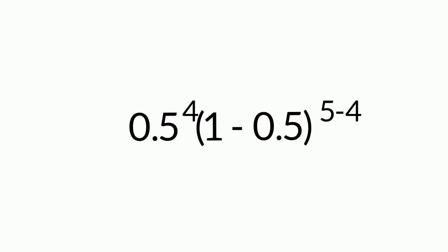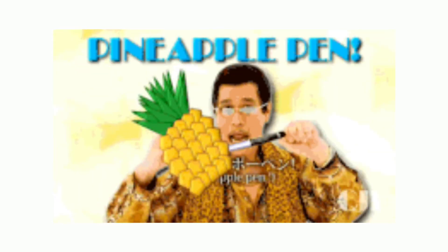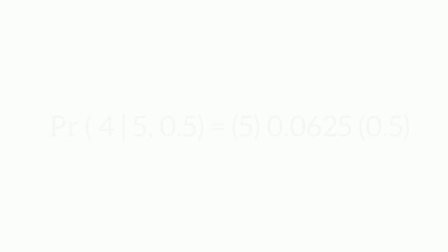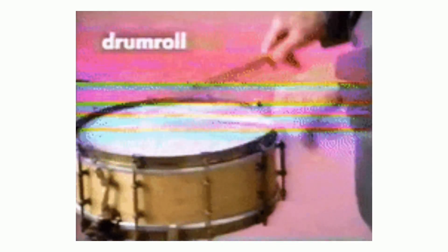After doing all those calculations, all that's left now is to put the results from our calculations together. So it turns into 5 times 0.0625 times 0.5, and the results are 0.15625.